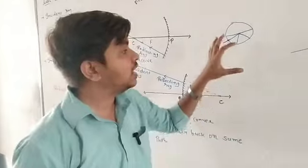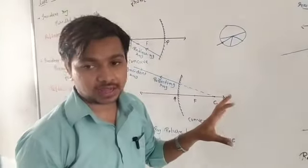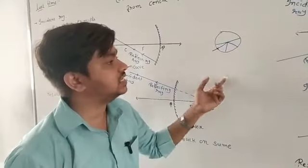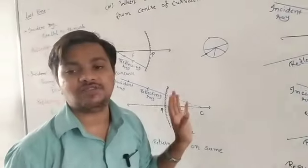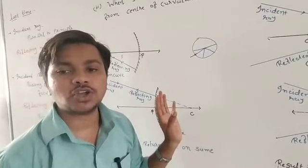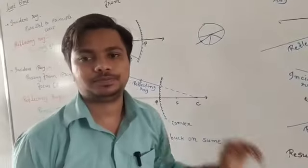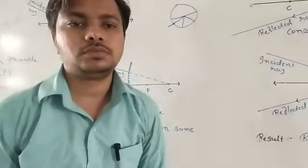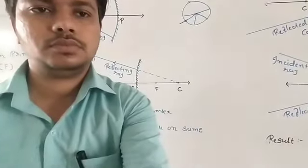You have to remember all four specific incident rays and where they will reflect after striking on the reflecting surface of a mirror, because without them we cannot form any image.